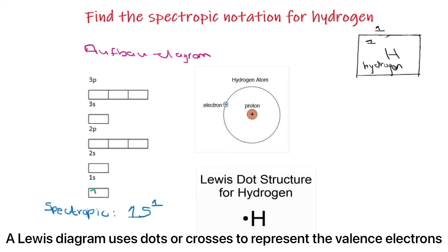So in summary, the element hydrogen, which is group 1, has 1 valence electron and has a spectroscopic notation of 1s to the power of 1.